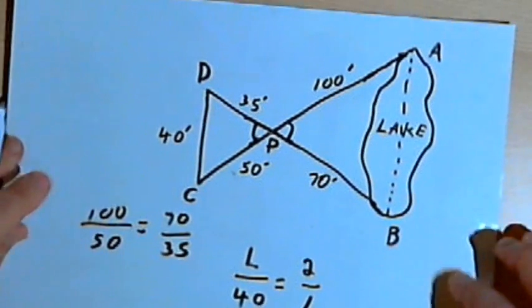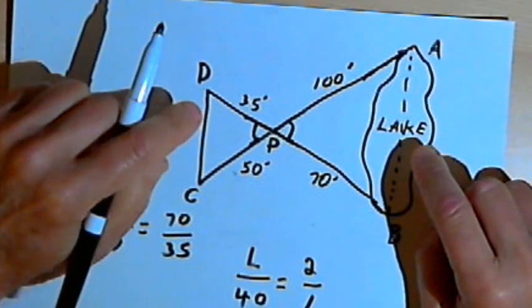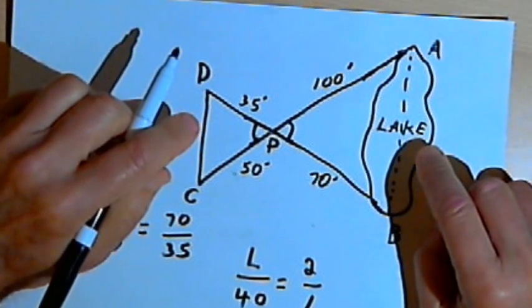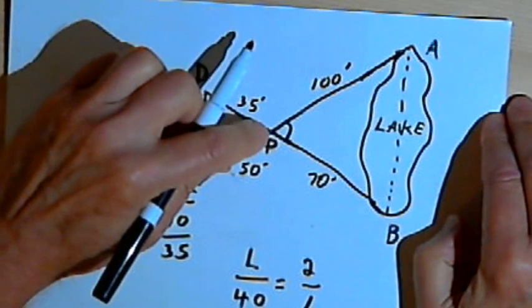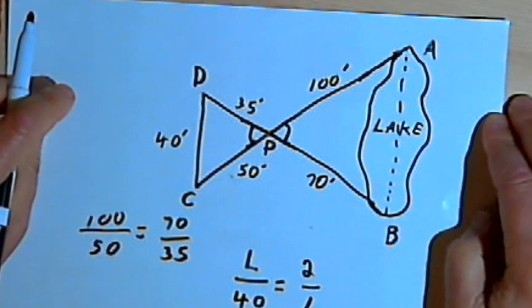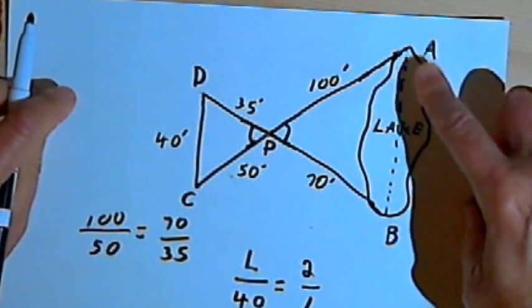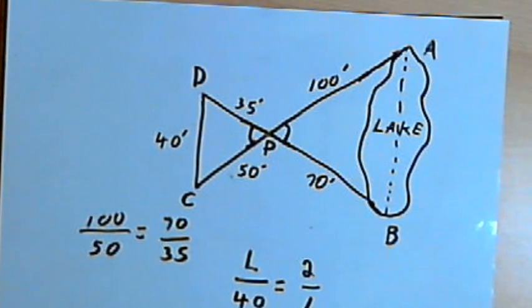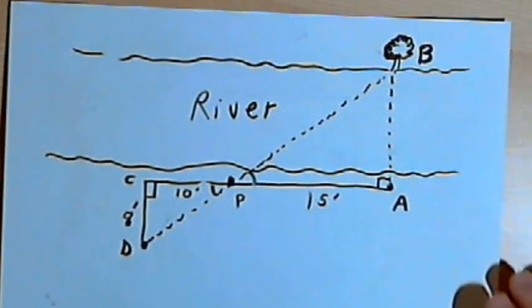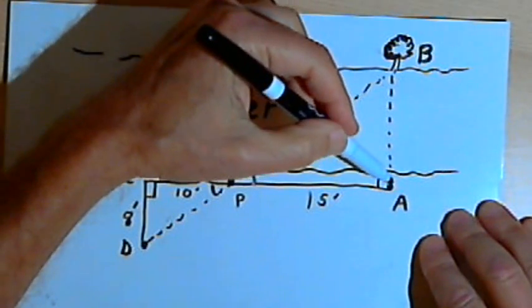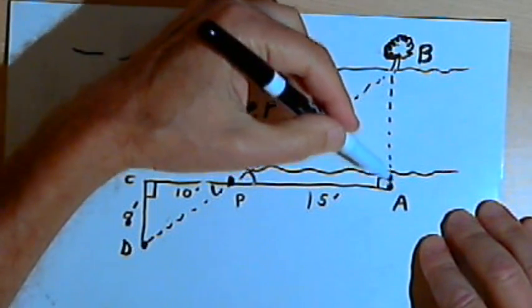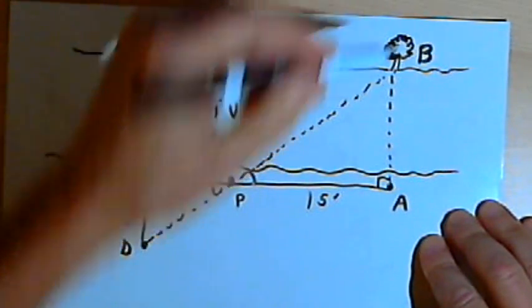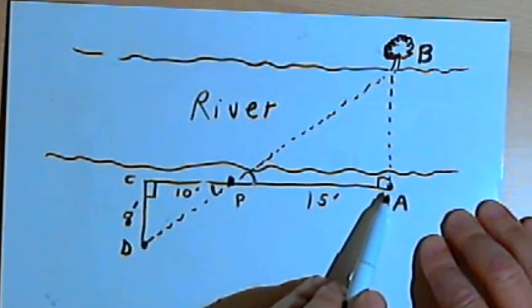Once again, two similar triangles. I proved they were similar by using side-angle-side similarity, and then I was able to find the unknown side. Here's the third kind of problem — this usually involves a canyon or a river. You want to find the distance from one side of the river to the other. So let's say you're standing at point A on one side of the river, and you notice that directly across from you there's a tree — we'll call that point B.